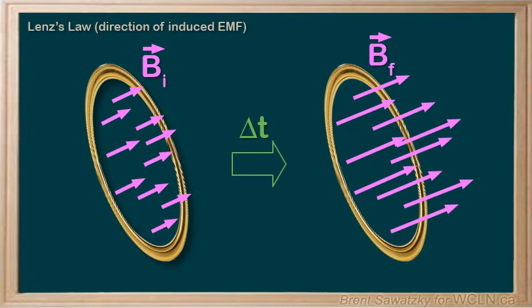And we think, if we had the area of this loop, the BF and the BI, and the time taken for the change, we could quickly use our equation and determine the magnitude of this induced EMF, thanks to Faraday. But what about the direction here?